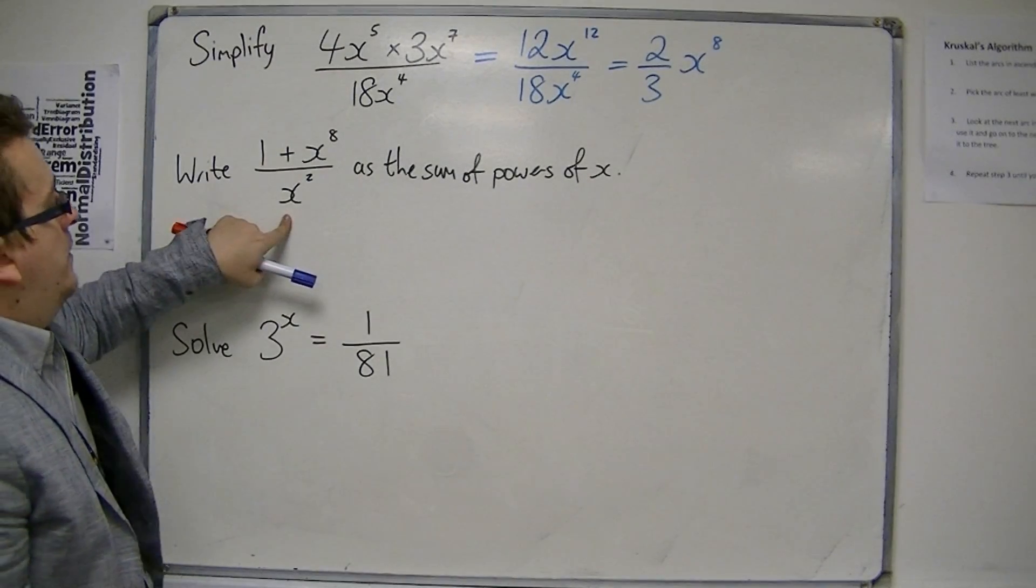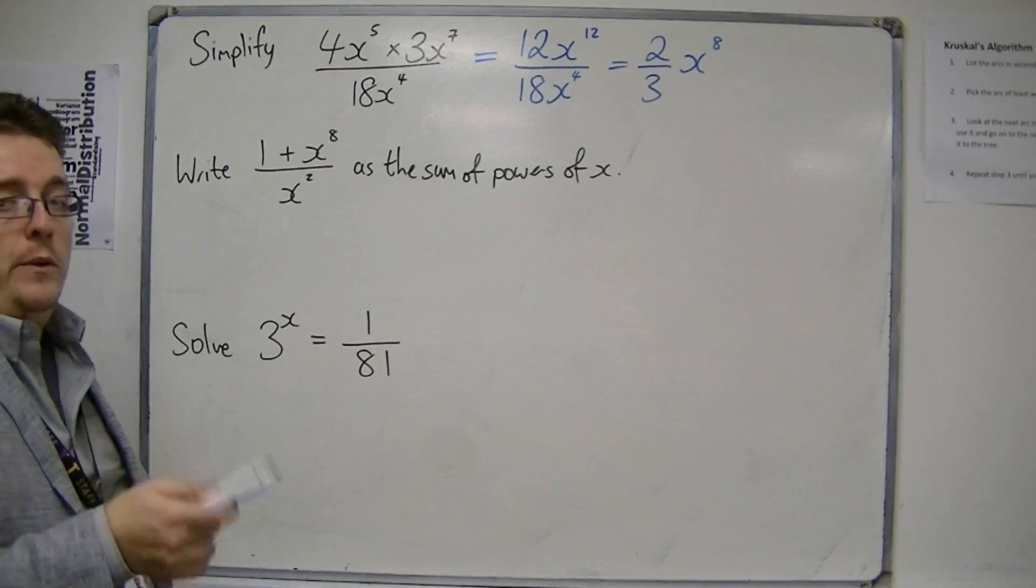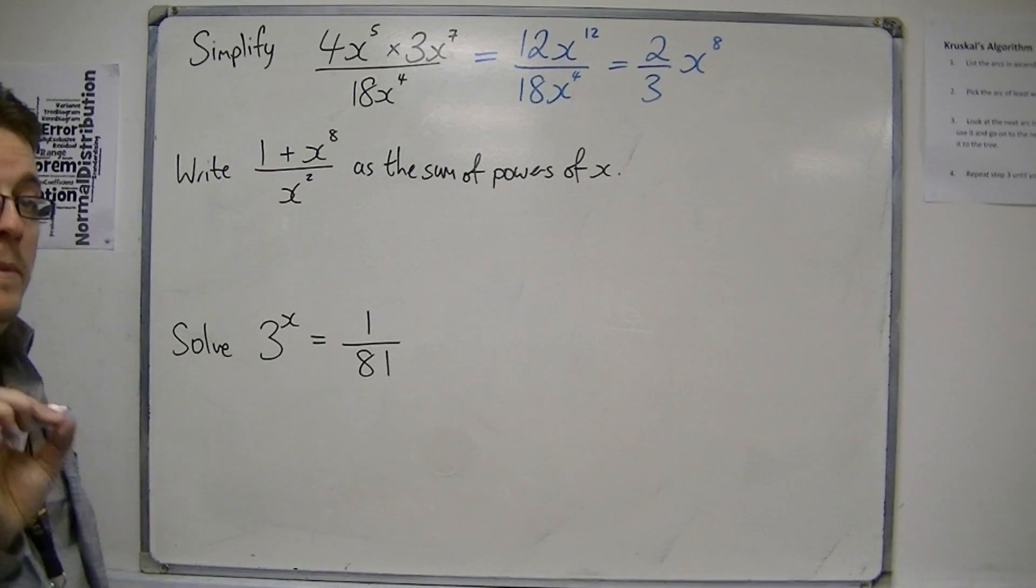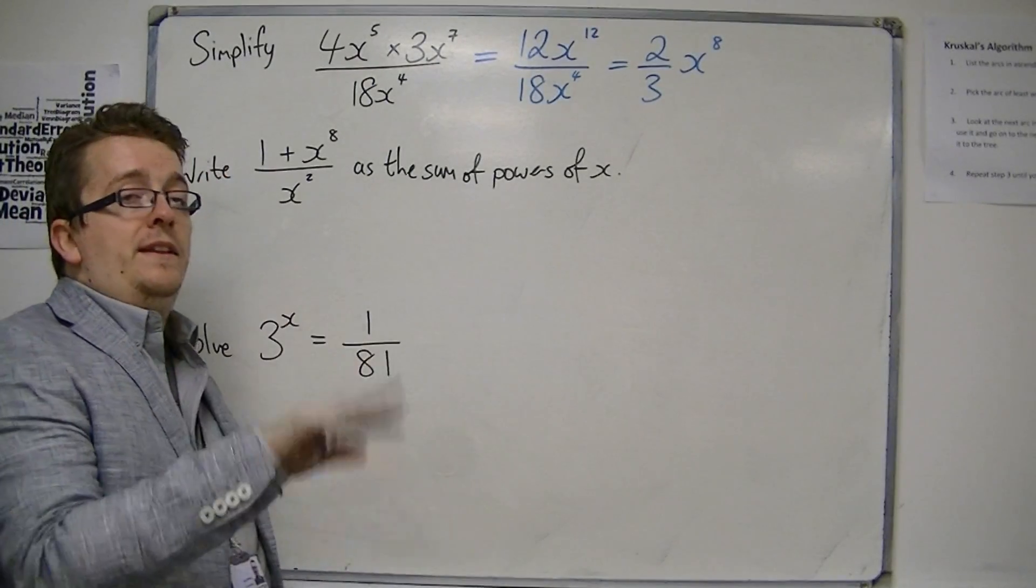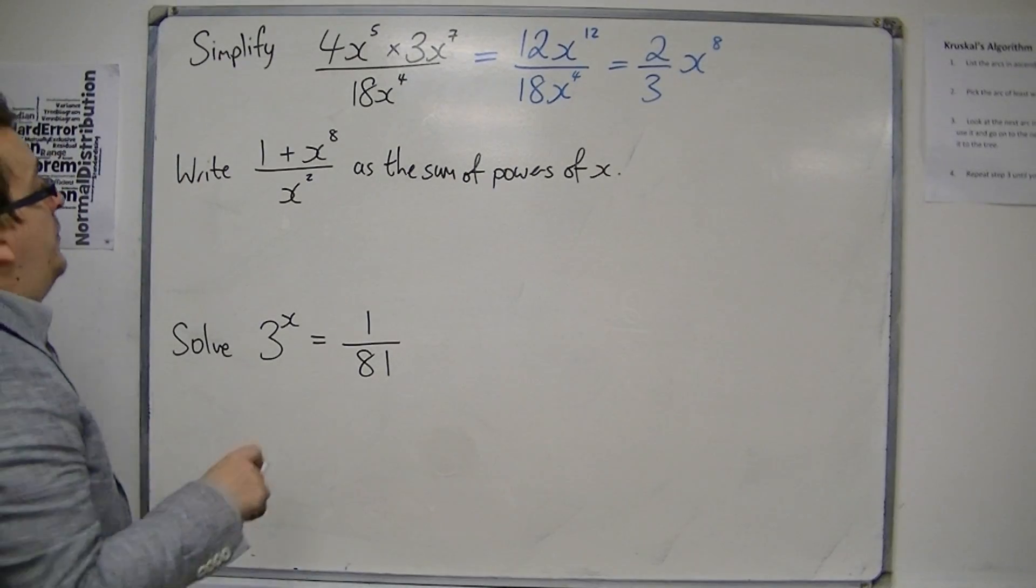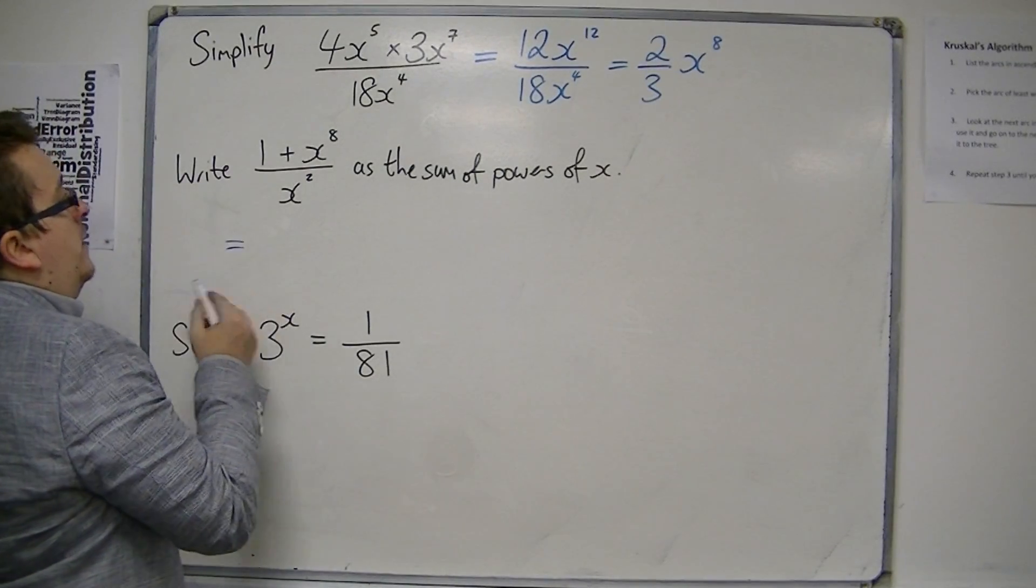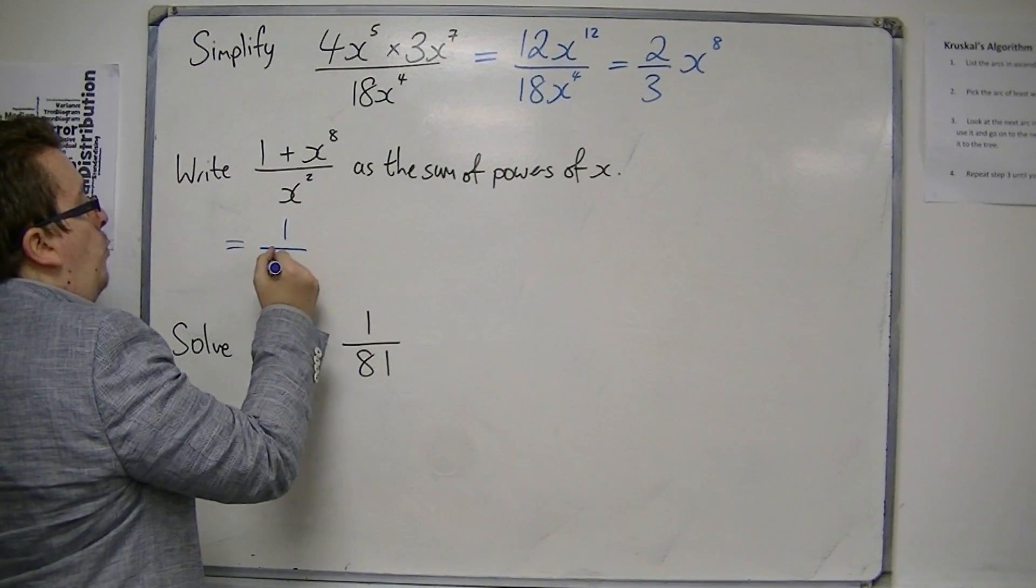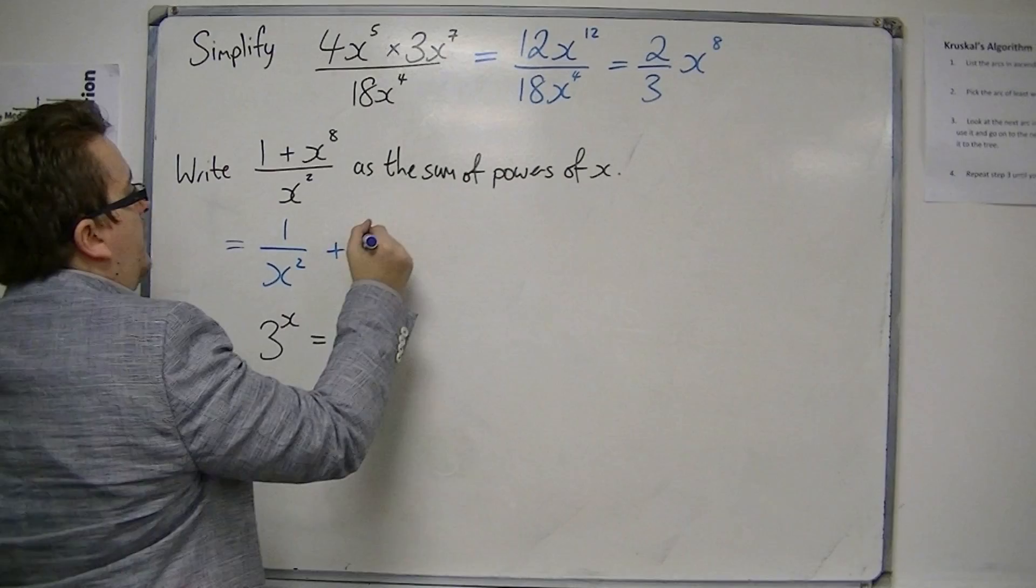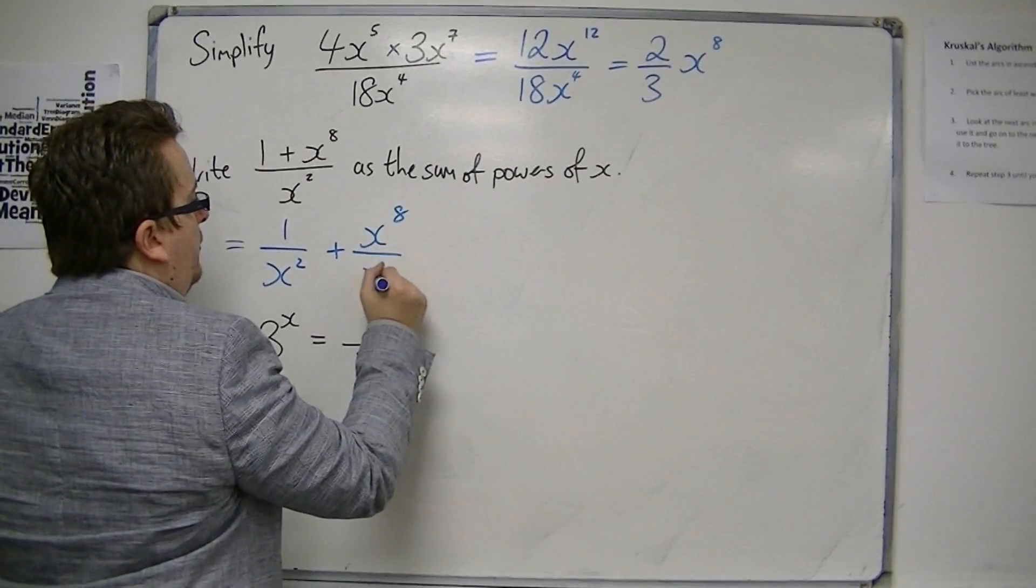Second one, write this expression as the sum of powers of x. This is a very important technique and will be used later in differentiation and integration. So first of all, split the fraction up, because they've both got this common denominator, and you can write it as 1 over x squared, plus x to the 8 over x squared.